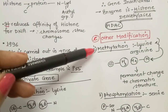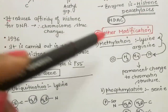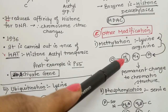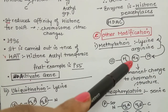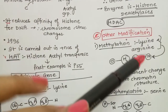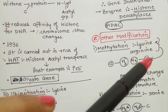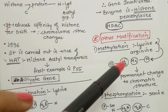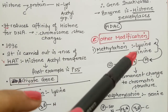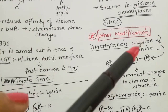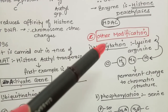Methyl group is added on histones H3 and H4. They also have N-terminal and C-terminal ends. On the N-terminal end of H3 and H4, the lysine and arginine residues present there receive the methyl group addition, thereby causing permanent change in the chromosome structure. Remember - there is a permanent change in chromosome structure, which can be a positive or negative change.